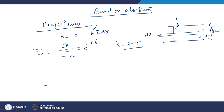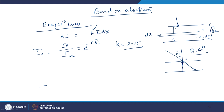For diffuse radiations, since radiations come from different directions, we normally assume they arrive at an angle θ equal to 60 degrees. In the generalized form, if the refracted angle is θ₂ and the glass thickness is δc, the transmissivity is modified to: τ_a = e^(−K·δc/cos θ₂), since the radiation travels a longer path through the glass.